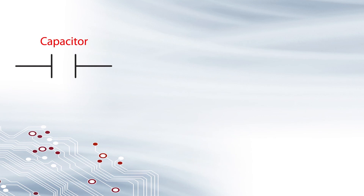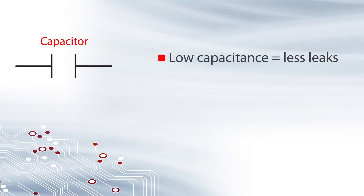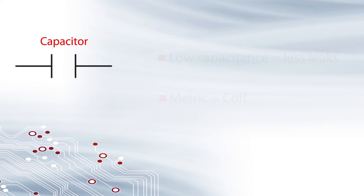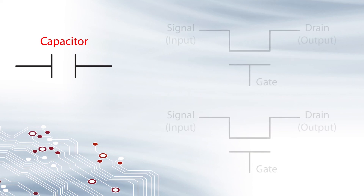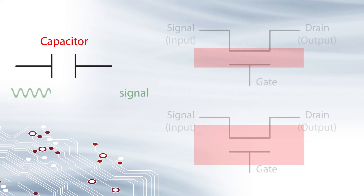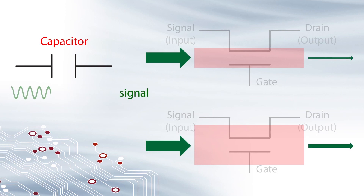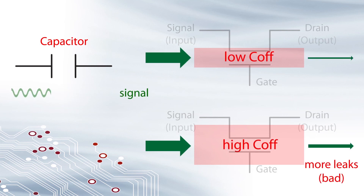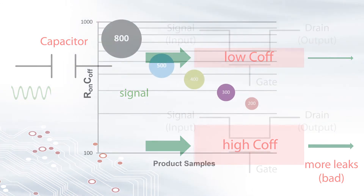A low capacitance will stop more of the signal from traveling from one port to another when the switch is off. This metric is called C off. C off is directly proportional to the width of the transistor. The wider the transistor, the higher the capacitance, and the more the signal leaks through the switch when it's off.